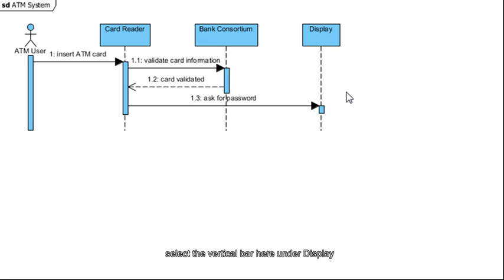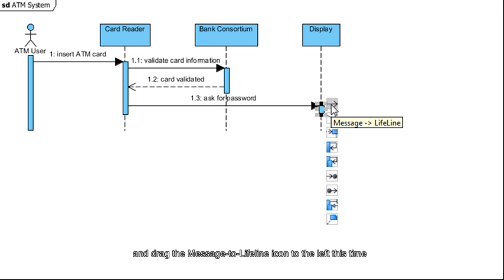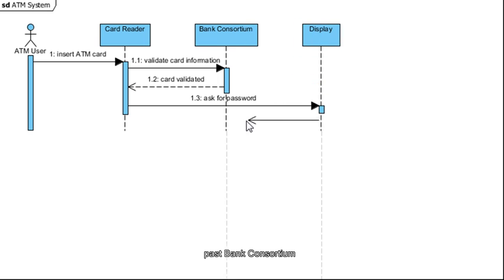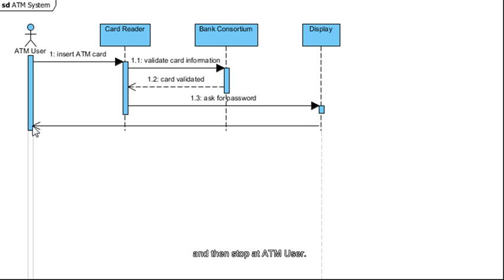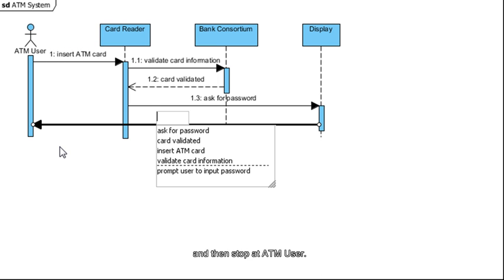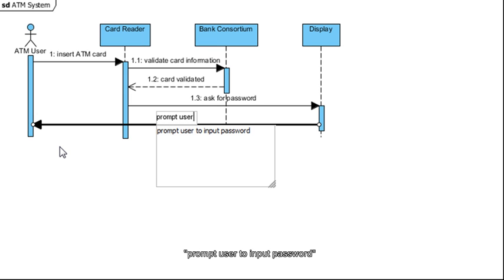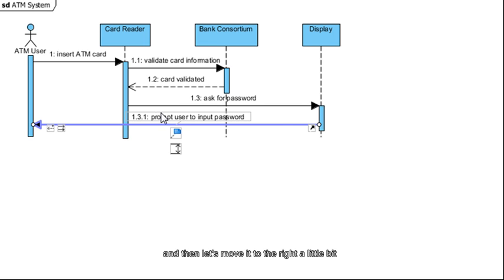Next, select the vertical bar here under Display and drag the Message to Lifeline icon to the left this time. Pass Bank Consortium, pass Card Reader, and then stop at ATM User. For the message, we're going to type in Prompt User to Input Password.